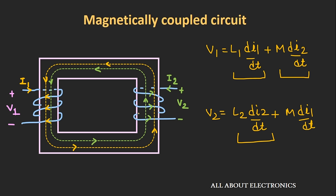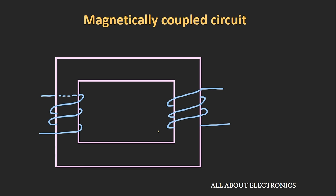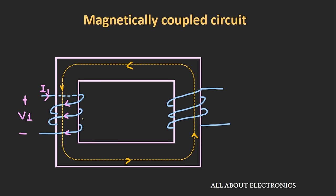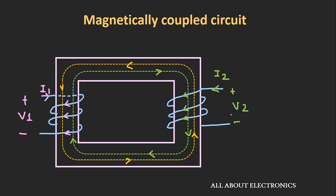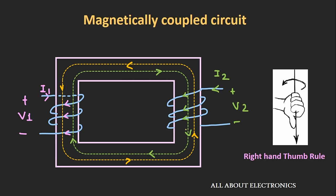Now let's see what happens when we change the direction of one of the windings. We keep winding 1 as it is but change the direction of winding in coil number 2. If we apply voltage to coil 1, current flows and produces flux in the downward direction. When voltage is applied to coil 2, the current flows in a new direction. Because we changed the winding direction, the flux generated flows in the opposite direction — the induced flux flows in the downward direction, as found using the right-hand thumb rule.